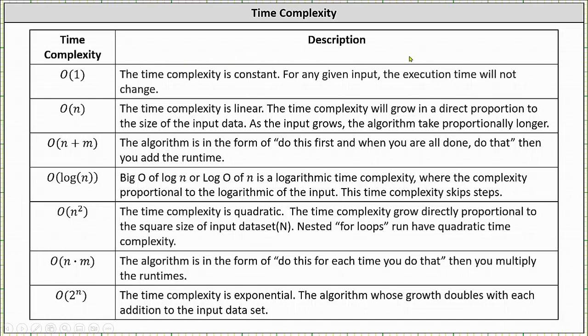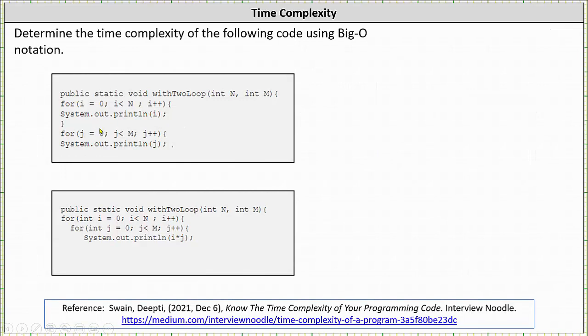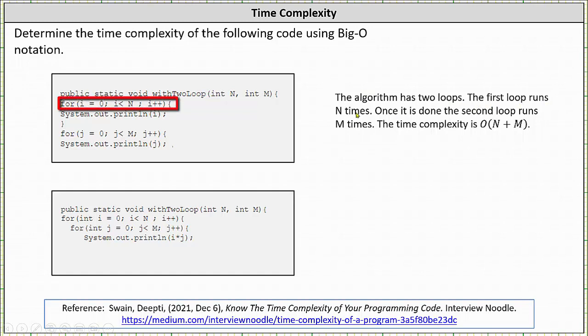And now let's look at our first example. Notice how the code does have two loops, but we don't have a nested loop. The algorithm has two loops. The first loop runs n times. Once it is done, the second loop runs m times, and therefore the time complexity is big O of n plus m.